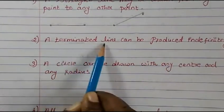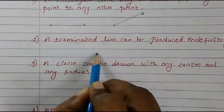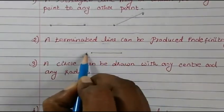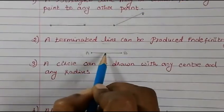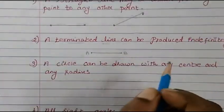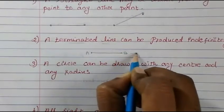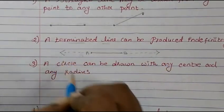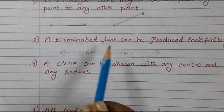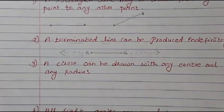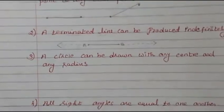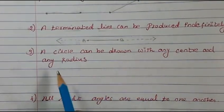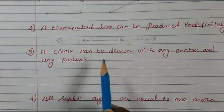The second postulate: a terminated line can be produced indefinitely. If you have a terminated line AB, it can be extended indefinitely in both directions — to either side, without any limit.